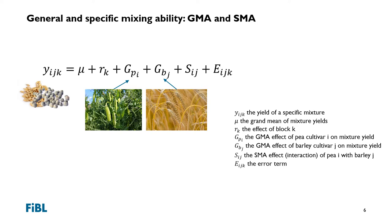When we apply this concept to mixture yield, we arrive at an equation where we can see the GMA effect of a given pea cultivar on mixture yield, designated as GPI, and the GMA effect of a given barley cultivar on mixture yield, designated as GBJ. And also the SMA effect — the interaction term between these two cultivars — designated as SIJ.